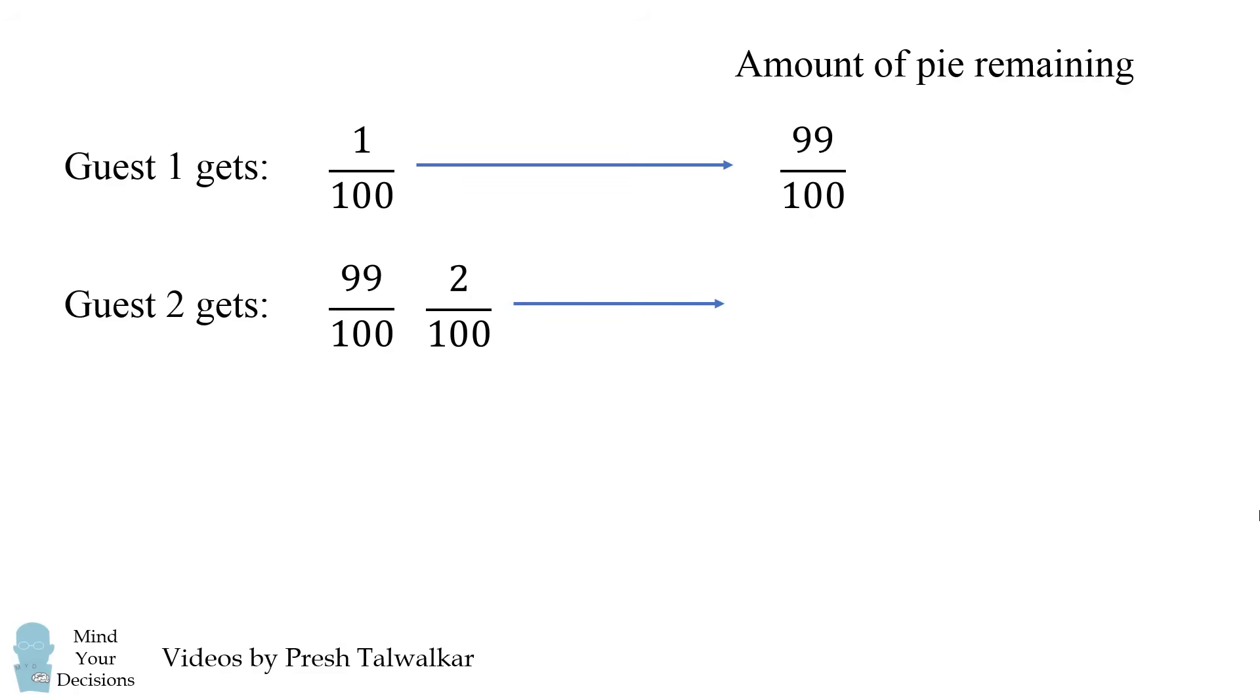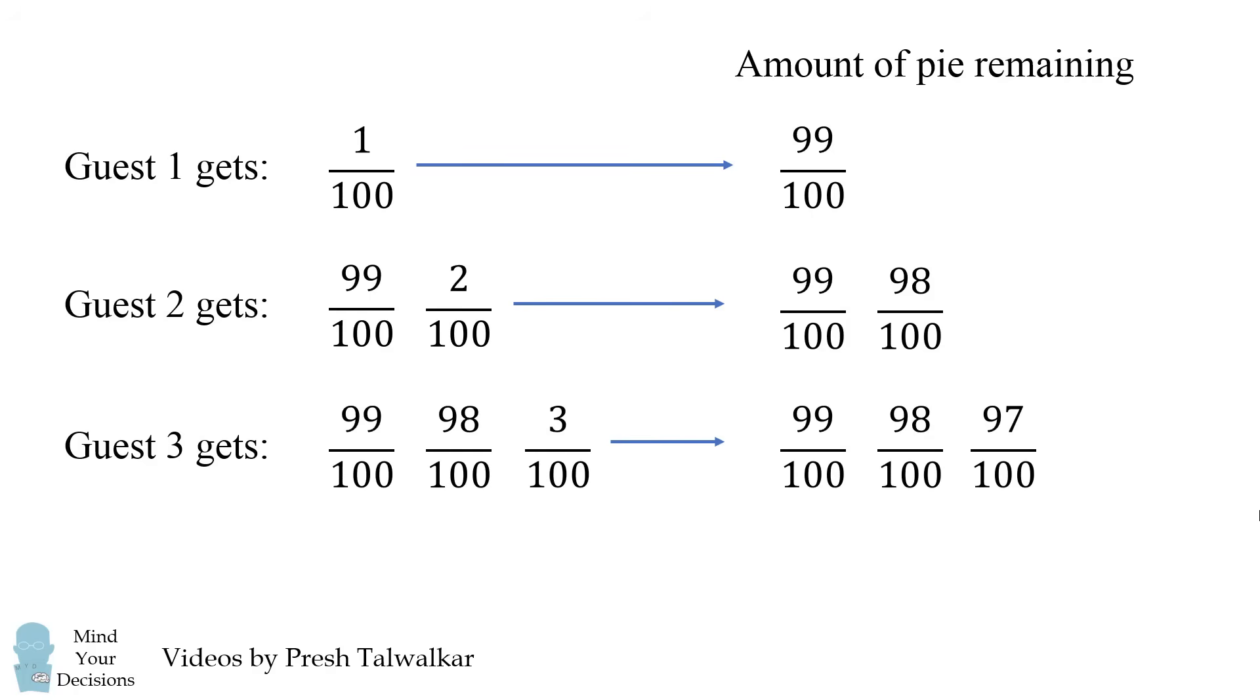We then need to calculate the amount of pie remaining after the second guest, and that will be 99 out of 100 multiplied by 98 over 100. And now you can see a pattern developing. So the third guest will get the remaining pie from the second guest and multiply that by 3 out of 100. We can then continue this pattern.